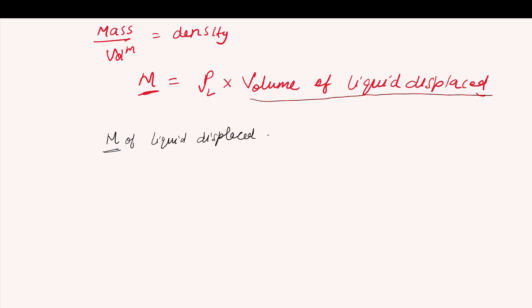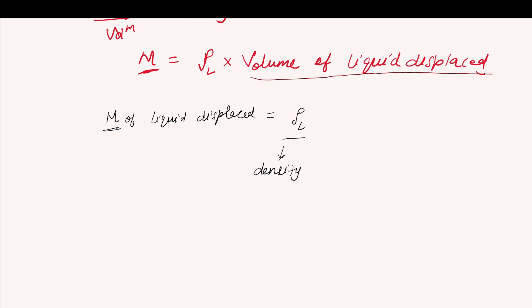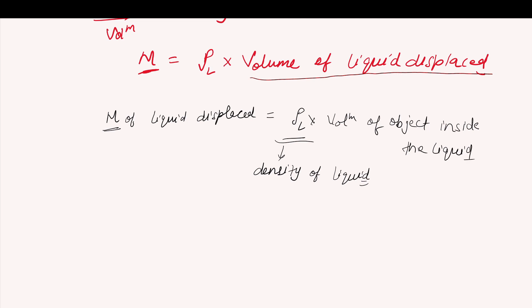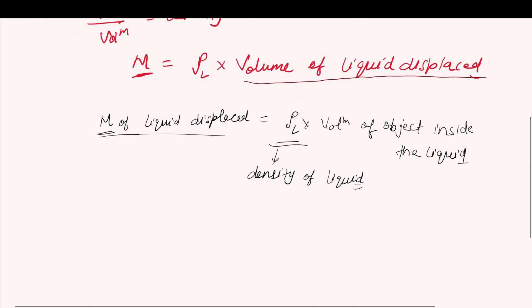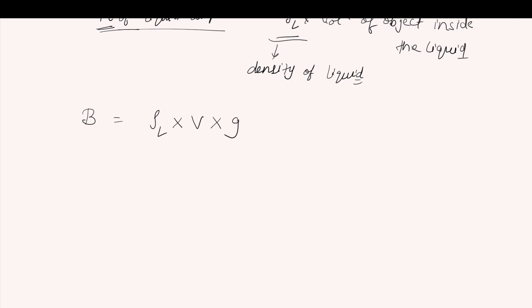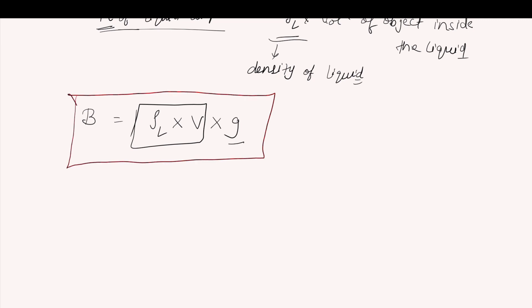So this gives us rho L — that is the density of liquid; it could be water, oil, honey, or any other liquid — multiplied by volume of the object inside the liquid. This can be substituted as the mass of liquid displaced in our equation to get the magnitude of buoyancy force: B equals rho L into V into g, because rho L into V is our mass of liquid displaced, and multiplying by g gives the weight of liquid displaced, which is our buoyancy force magnitude.